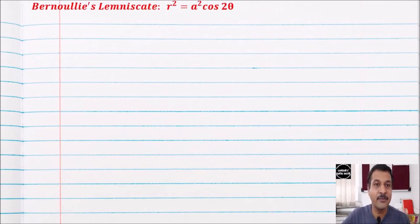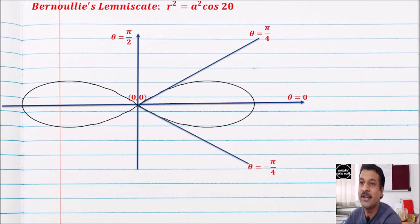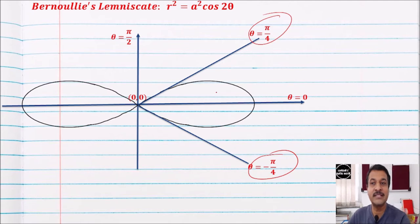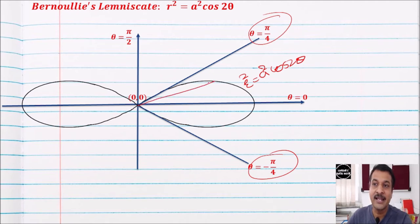Bernoulli's Lemniscate is a well-known curve: r² = a² cos 2θ. You can find there are two loops. These loops are bounded by θ = −π/4 to θ = π/4 for one loop, and similarly for the other. Normally there will be examples on finding the area of one loop, two loops, or the length of a loop. The radius vector goes from 0 to r = √(a² cos 2θ).